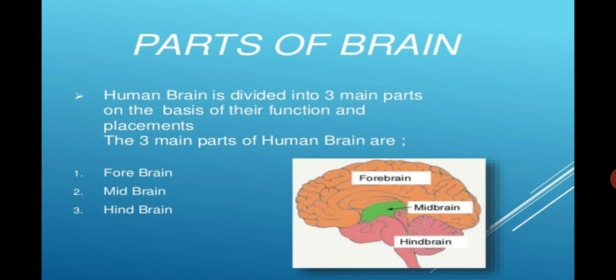What are the main parts of the brain? Human brain is divided into three main parts on the basis of their function and placement. The three main parts of human brain are forebrain, midbrain, and hindbrain. You can watch these three parts in the figure clearly: the forebrain is represented by yellow color, midbrain is represented by green color, and hindbrain is represented by pink color.